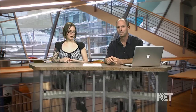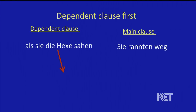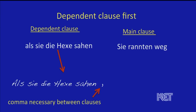But when we switch the two and the dependent clause comes first — that's where it gets interesting. When the dependent clause comes first, let's put the dependent clause up: 'Als sie die Hexe sahen.' And then our main clause: 'Sie rannten weg.' Unfortunately, we can't just put them down the way they read. After the dependent clause 'Als sie die Hexe sahen,' we need a comma again. The comma is an important feature of putting clauses together — it's necessary between clauses. A clause usually has a subject and a verb, and if you put it together with another subject-verb combination, you need a comma.